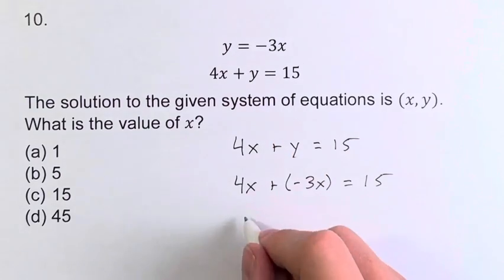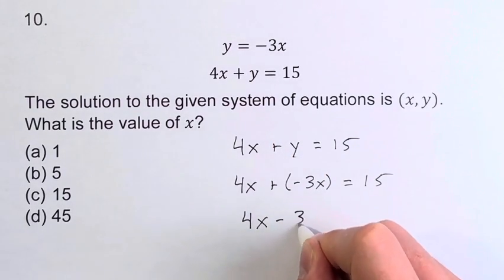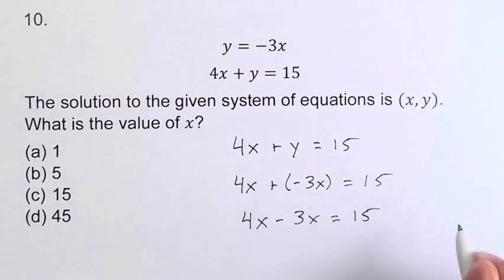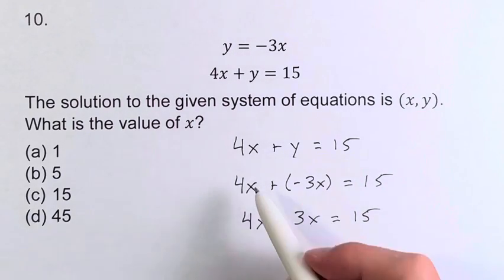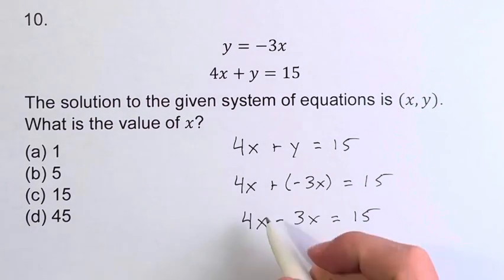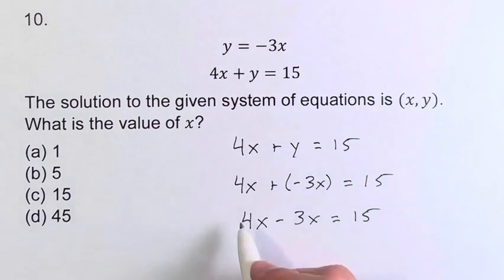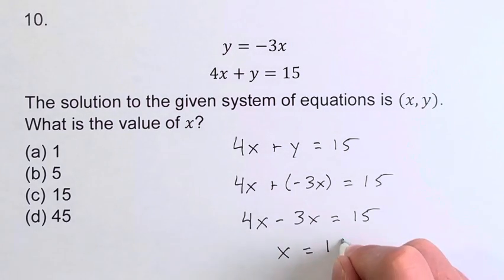So we have 4x plus negative 3x equals 15. Adding negative 3x is the same as subtracting 3x. 4x minus 3x is just x, which equals 15.